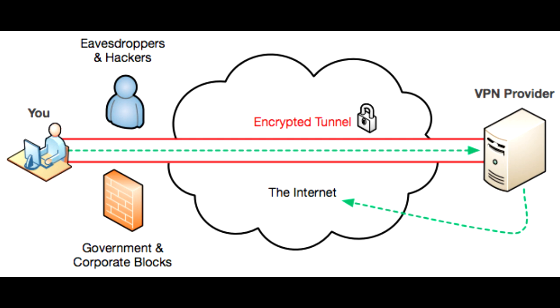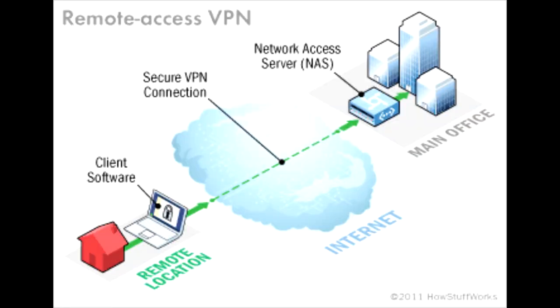There are two basic VPN types. First, remote access VPN. Remote access VPN allows a user to connect to a private network and access its services and resources remotely. The connection between the user and the private network happens through the internet and is secure and private. Remote access VPN is useful for both business users and home users.